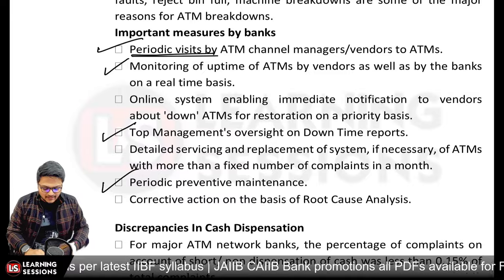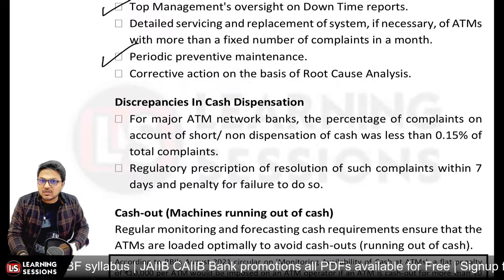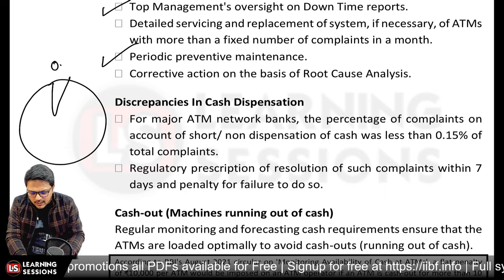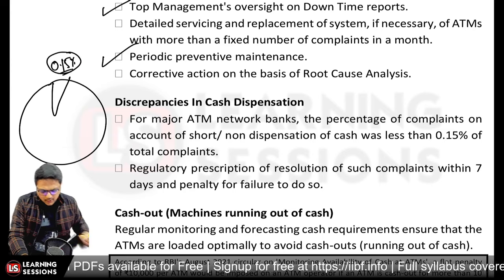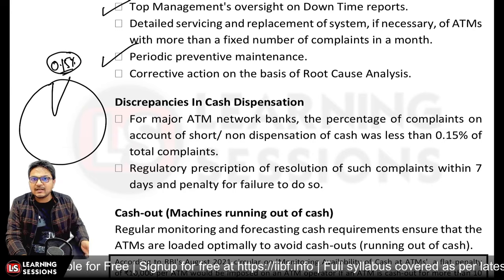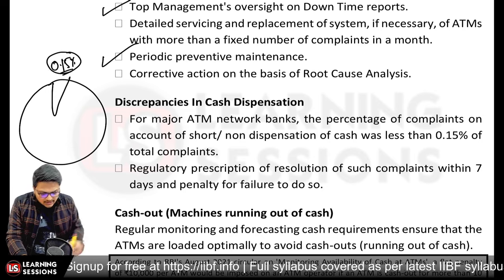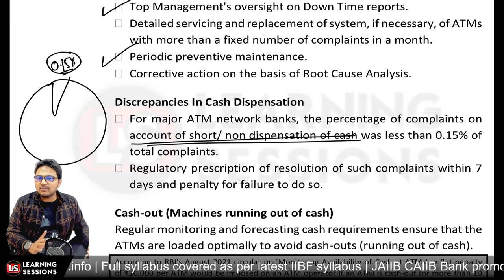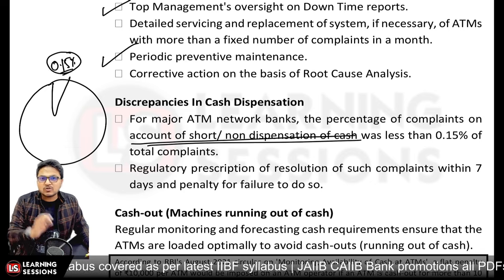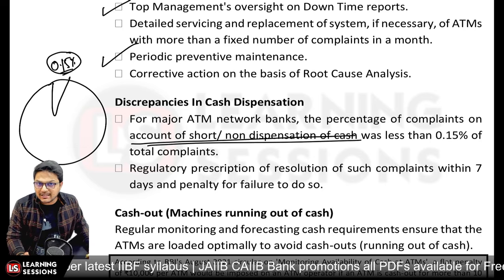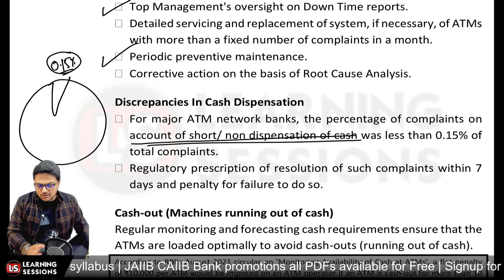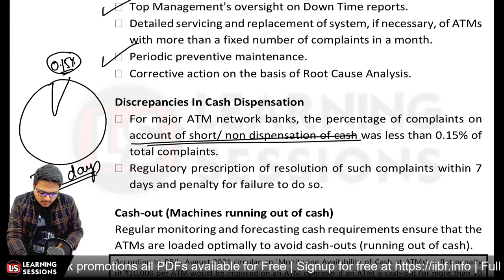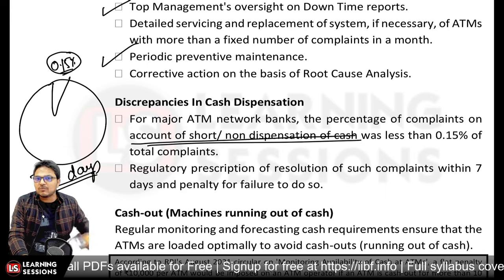Corrective action must address root causes. For discrepancies in cash dispensation — for major ATM network banks — only 0.15% of total complaints relate to cash not being dispensed. This low figure is due to stringent regulatory guidance. If not resolved within T+5 days, ₹100 per day penalty applies. RBI has mandated that cash-out must not exceed 10 hours in a particular month.